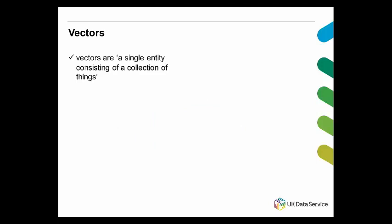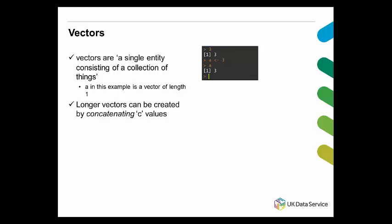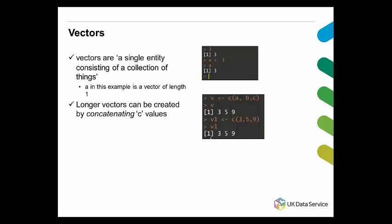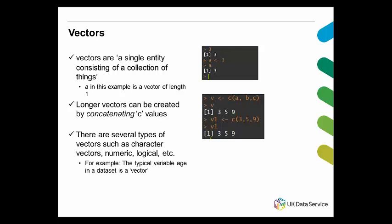So what are vectors? As I said before, they are just variables, but they are defined as a single entity consisting of a collection of things — for example, a collection of letters, names, or numbers. We create a vector using the letter c for concatenate. The typical variable age in any dataset that we usually use is a vector. We don't normally need to create vectors ourselves, but it's good to know what we're talking about when you see the word vector around.